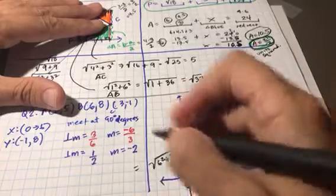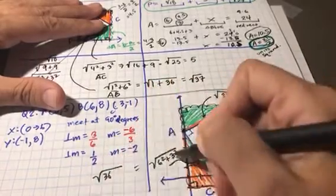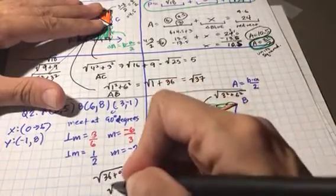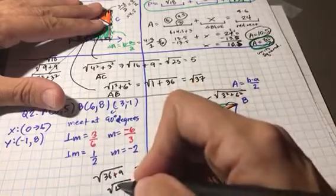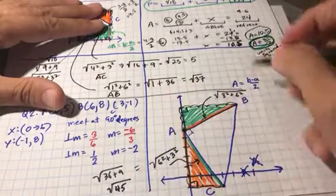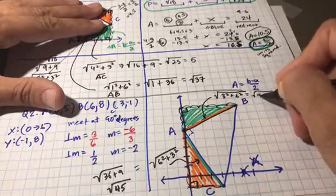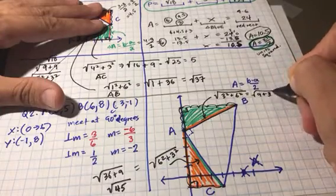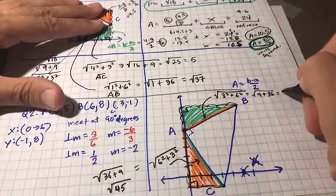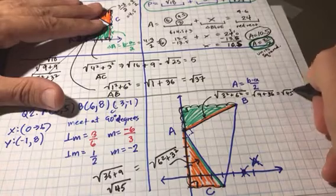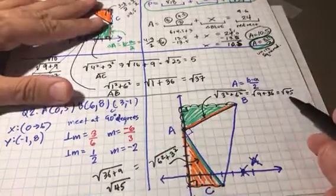So we do 6 squared is 36. 3 squared is 9. When I add that up, I get 45. Now if I look here, 3 squared is 9, and 6 squared is 36. And when I add them up, I get the square root of 45. Very cool. All right, so now I can plug this back in.